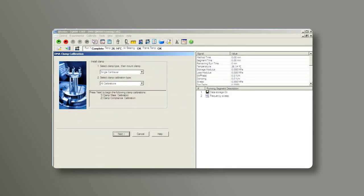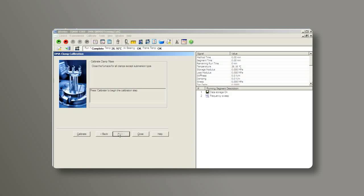From the control software, go to calibrate, clamp, choose single cantilever, all calibrations, next. Close the furnace from the instrument touch screen, then click on calibrate.